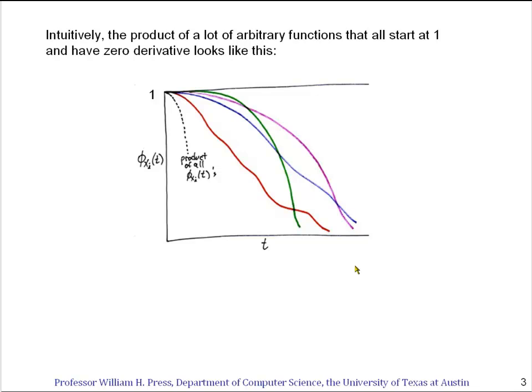Intuitively, what's going on in the proof is this: We've got a product of a bunch of characteristic functions. We know they all start at one and have no linear term, then have a negative quadratic term. I've drawn here, in various colors, functions that have that property. They start at one and have different degrees of negative curvature as they fall off. Now we're going to take the product of all these functions.